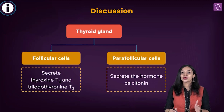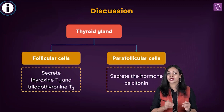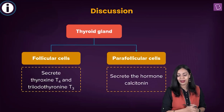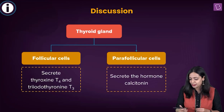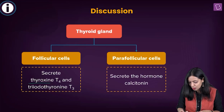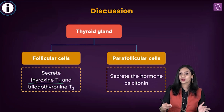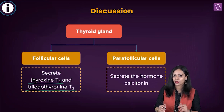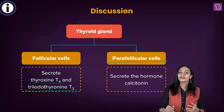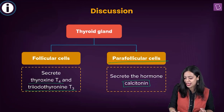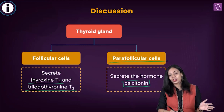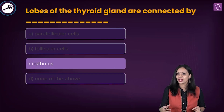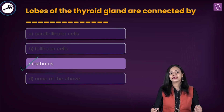The other options — follicular cells and parafollicular cells — are two different types of cells found within the thyroid gland. Follicular cells are involved in synthesis and secretion of thyroxine (T4, also known as tetraiodothyronin) and T3 (triiodothyronin). Parafollicular cells are involved in the secretion of calcitonin. In this question, we were asked what connects the two lobes of the thyroid gland — the correct answer is option C, isthmus.